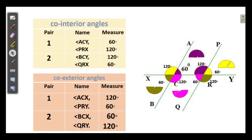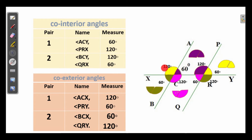Now we have to name the co-interior angles. The first pair is angle ACY and angle PRX — these are 60 degrees and 120 degrees. The second pair is angle BCY and angle PRX. Then for co-exterior angles: angle ACX and angle PRY — this is 120 degrees and 60 degrees. And angle BCX and angle QRY — this angle is 60 degrees and this angle is 120 degrees.